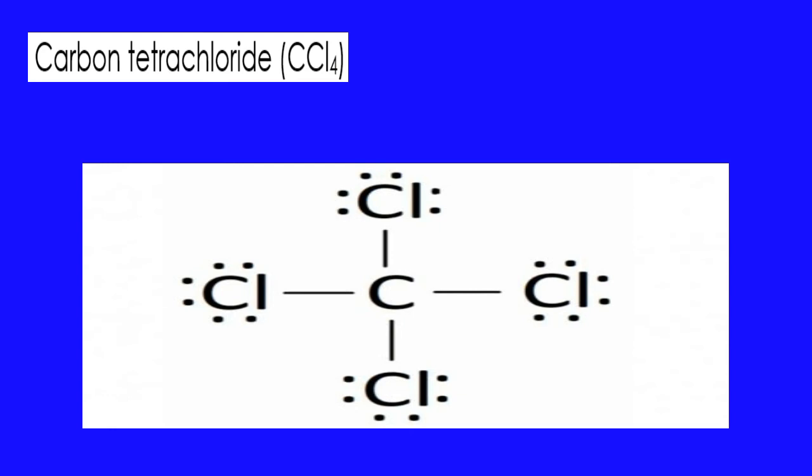Number two: carbon tetrachloride. In the carbon tetrachloride molecule, four chlorine atoms are positioned symmetrically as corners in a tetrahedral configuration, joined to the central carbon atom by single covalent bonds.